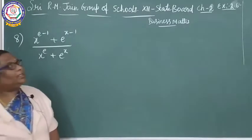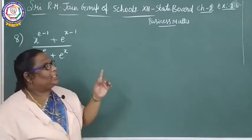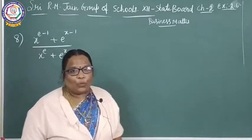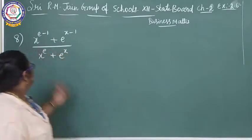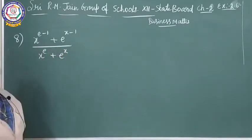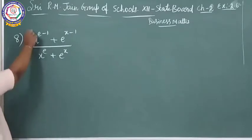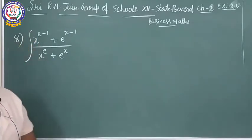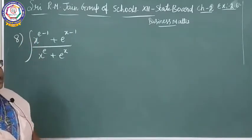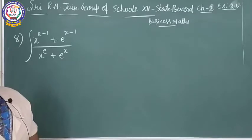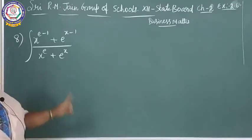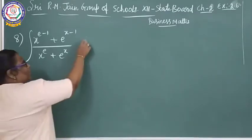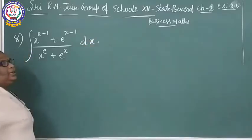Shri Gurudan Omichita. This is 12th standard Business Maths, Chapter 2, exercise 2.6. Sum — integrate x·e^(x-1) plus e^x, that is e^(x-1) plus e^x divided by x^e plus e^x, into dx.